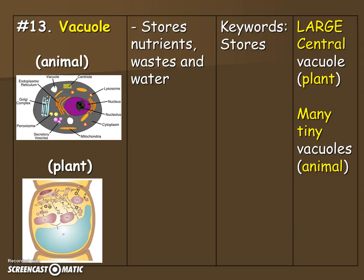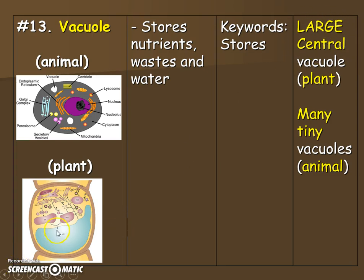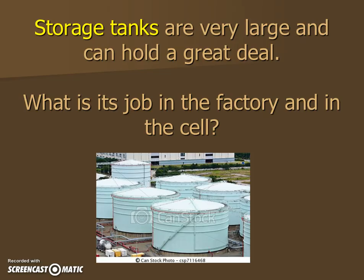Vacuole — there are plant and animal vacuoles. The important job of both is to store nutrients, waste, and water. The keyword is store. Do notice they're different for plants and animals. The plant vacuole is a large central one — draw that big blue structure holding water or nutrients. The animal cell has many tiny ones instead. They both have vacuoles, but different types and sizes. Our analogy is to think of this like a storage tank, which can hold food, water, or waste for the factory.